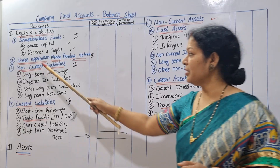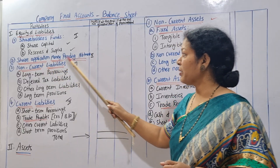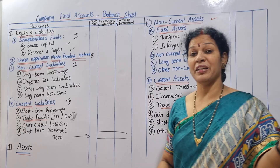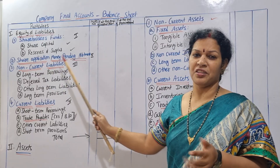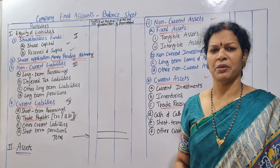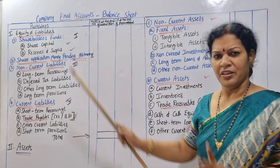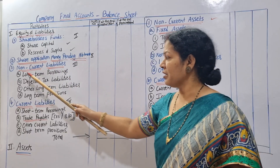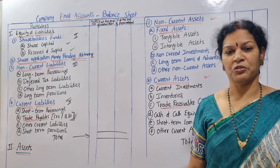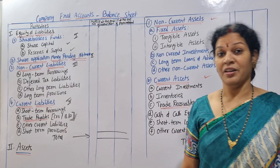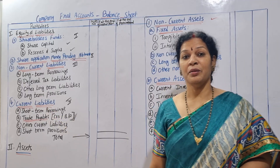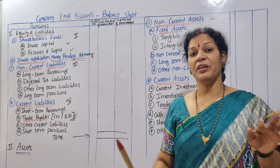Second is share application money pending allotment. Generally, we don't have to worry about it. After that, we have non-current liabilities. Non-current liabilities are liabilities of more than one year.